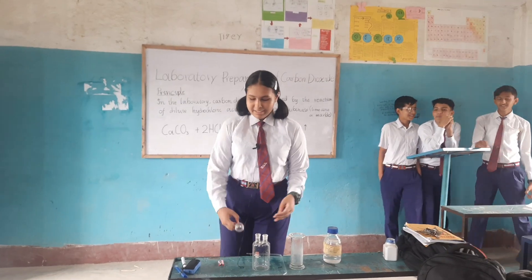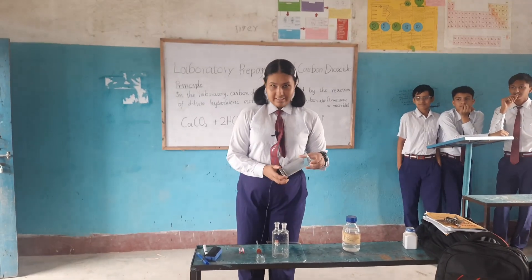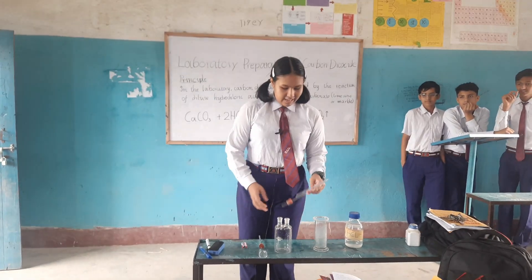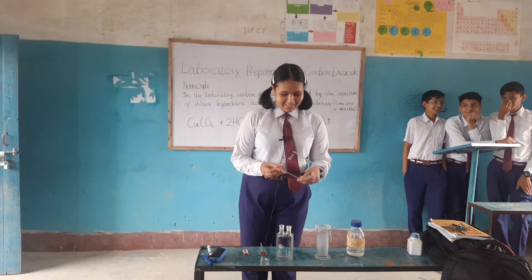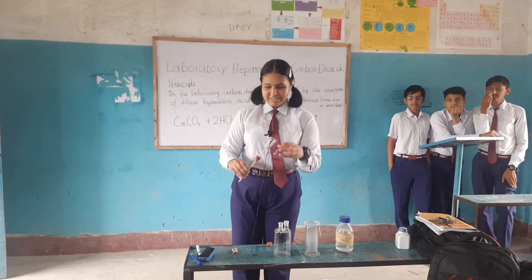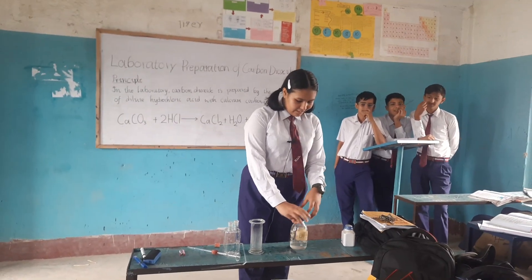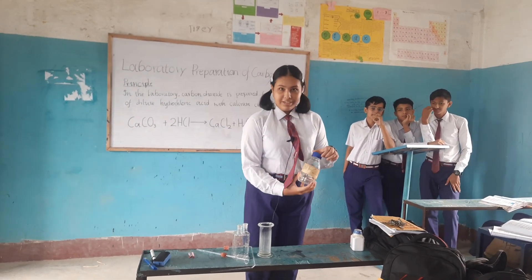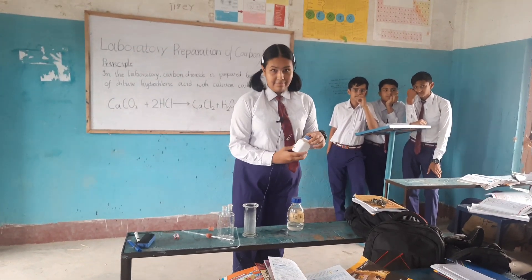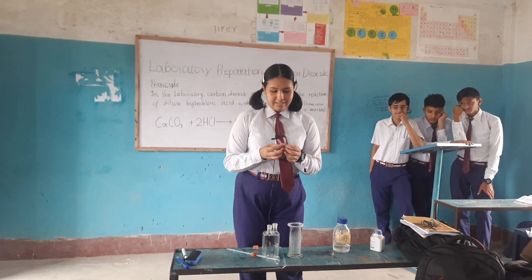For the chemical reaction, apparatus is a must. Here we have a gas jar to collect the carbon dioxide gas. This is the delivery tube and this is called the Wolf bottle. Here we have dilute hydrochloric acid as our first chemical and marble chips as our second chemical. We also have litmus paper for testing whether the gas produced is carbon dioxide or not.